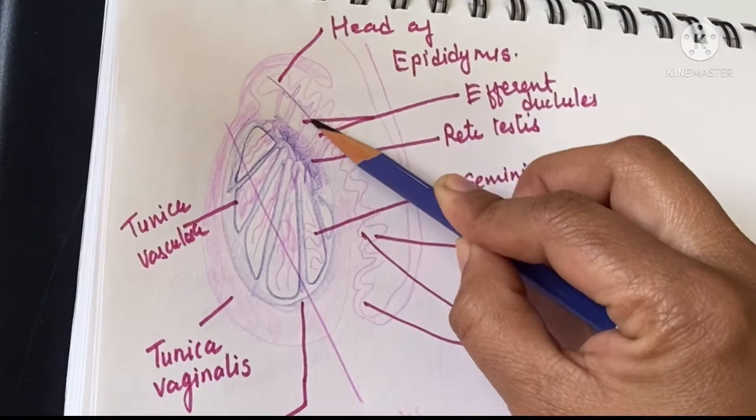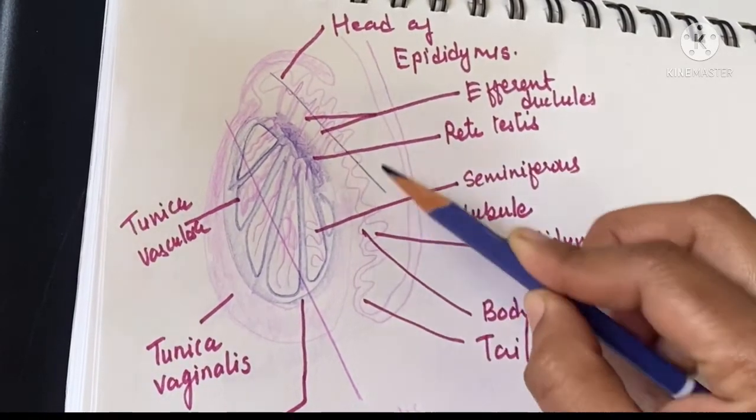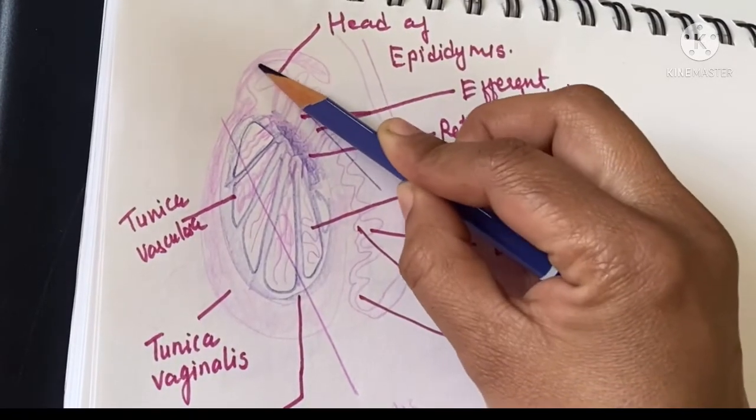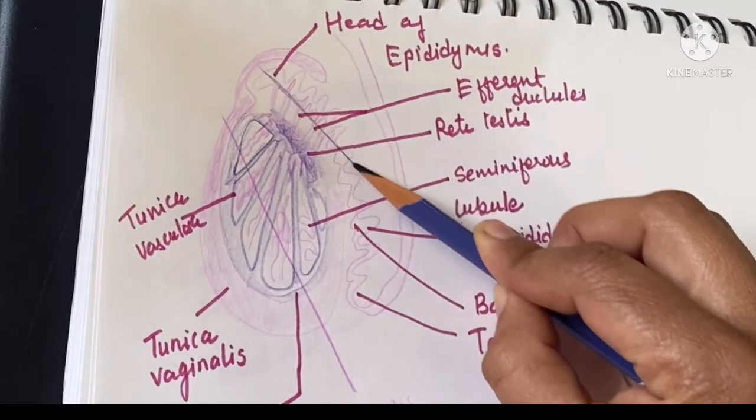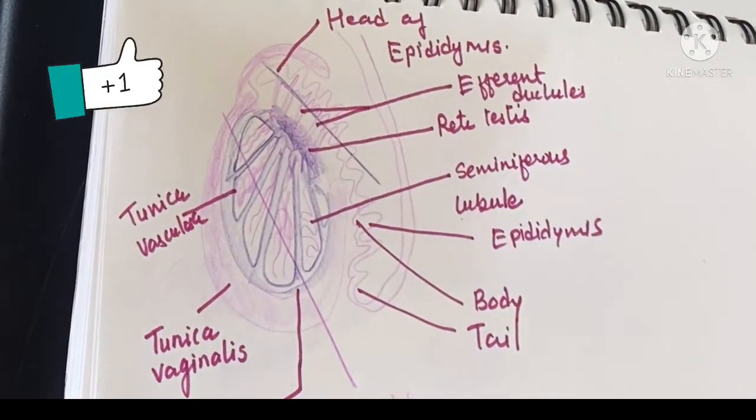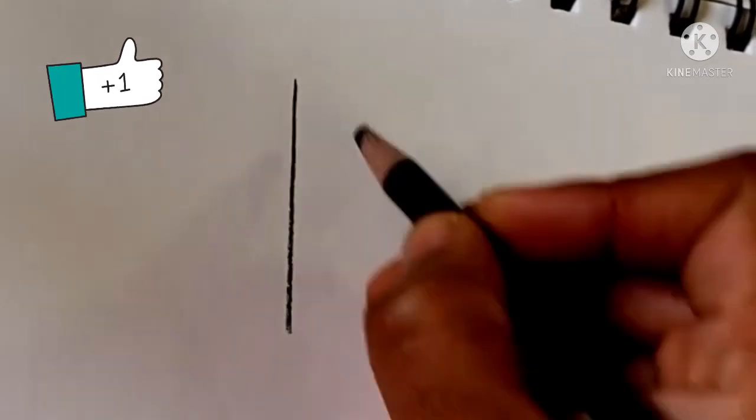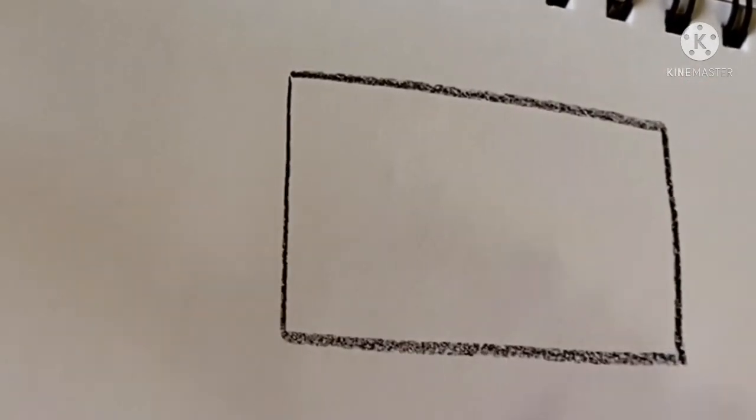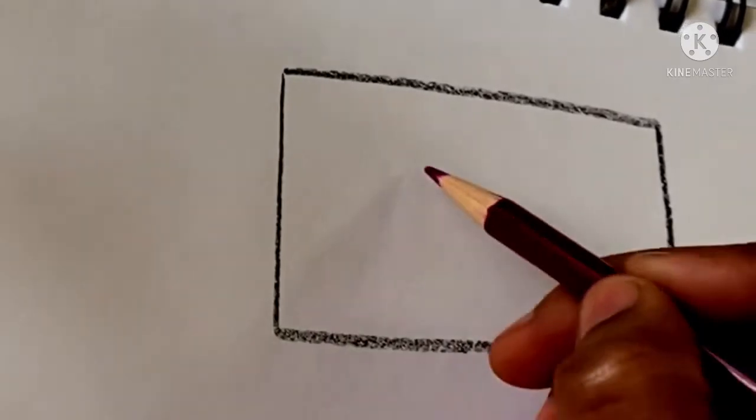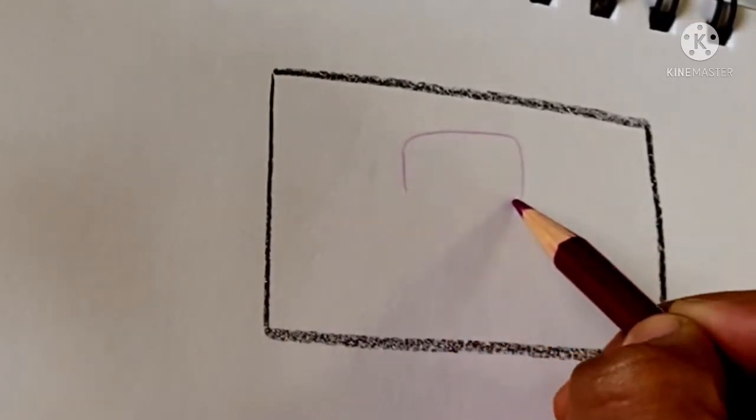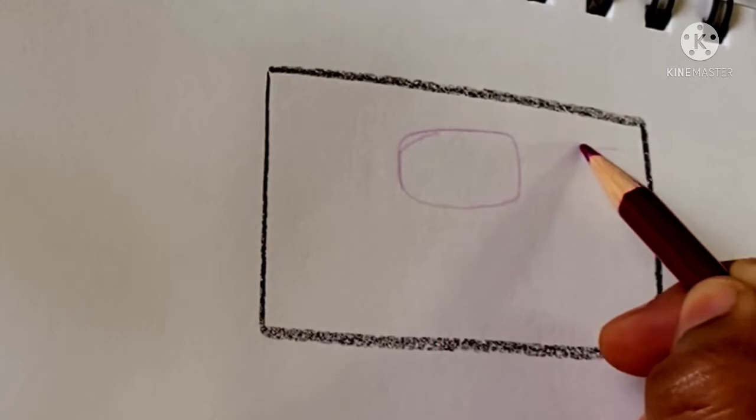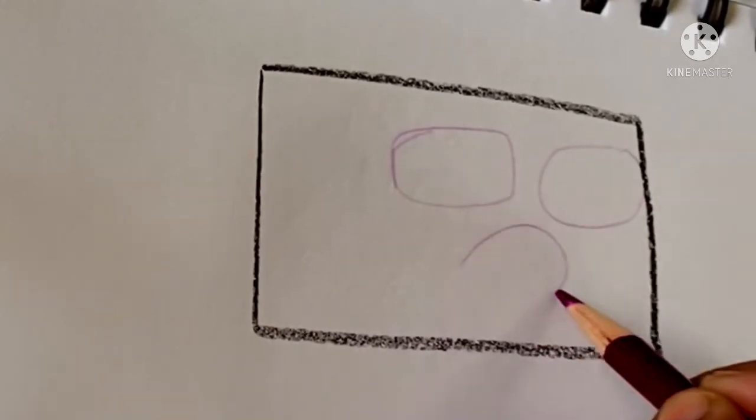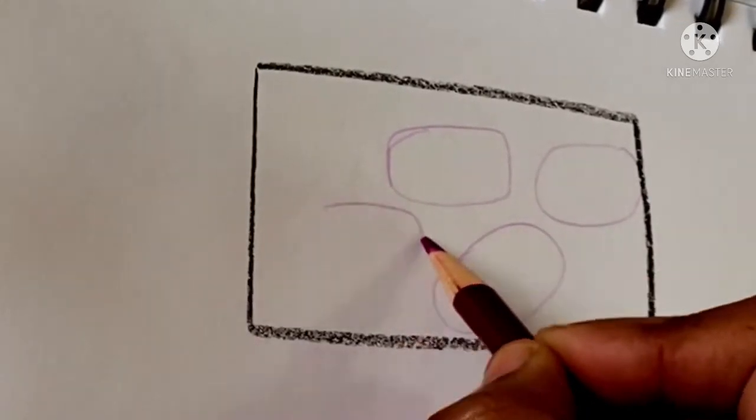Head of the epididymis is formed by the efferent ductules which arise from the testis and join to form the head. Body and tail contain a single duct of epididymis, and the tail continues with the ductus deferens.